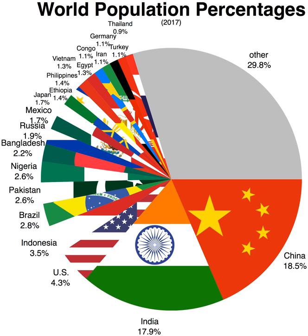Areas that form integral parts of sovereign states, such as the countries of the United Kingdom, are counted as part of the sovereign states concerned. Not included are other entities, such as the European Union, that are not sovereign states, and independent territories that do not have permanent populations, such as various countries' claims to Antarctica.